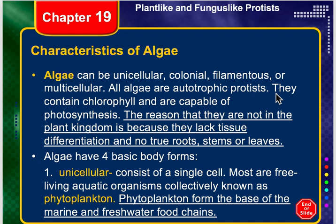Phyto means plant, and plankton means plankton. Plankton is a group of organisms made up of algae — phytoplankton. It's also made up of little animals called zooplankton, and other things like krill and different organisms. It's a collective source and usually the main food source for whales and some other aquatic animals.